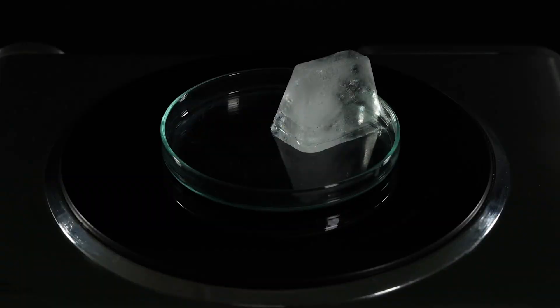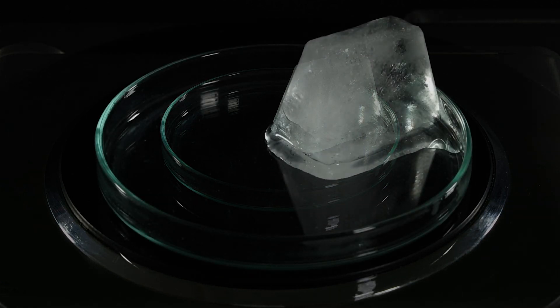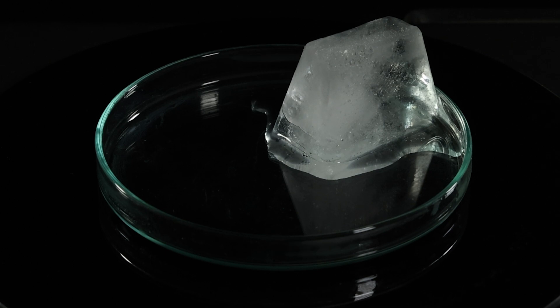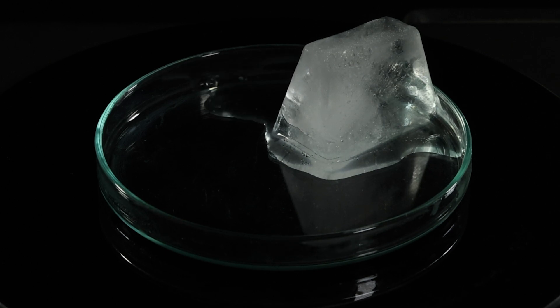Matter changes state when it is either heated or cooled. Let's take a closer look. Let's place a block of ice into a dish on an electric hot plate. Ice is water in a solid state. As the hot plate heats the ice, it begins to change. It melts into water.